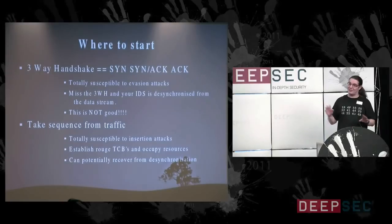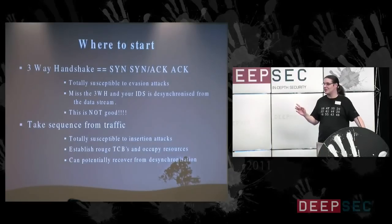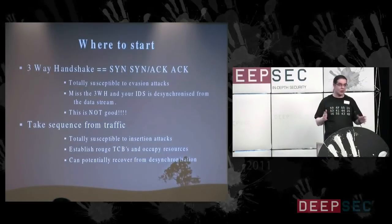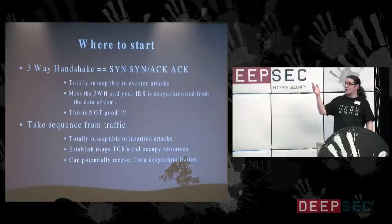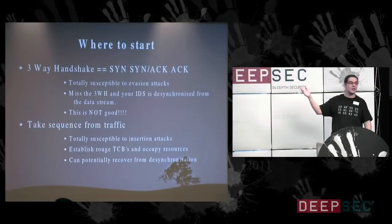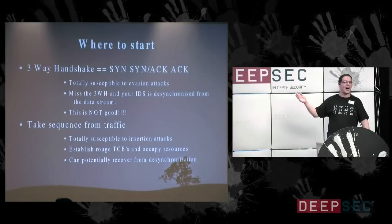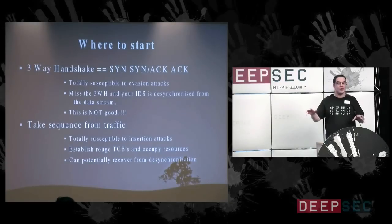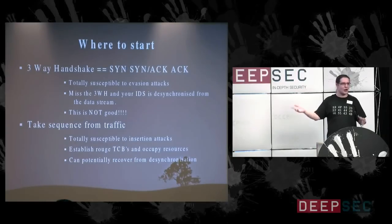If the IDS takes sequencing from traffic data only, that's also exploitable — I'll set up lots of spurious connection data so you start creating lots of TCB blocks, and let's see how much system resources you've got. Let's see how long you hold on to that TCB before you drop it, because from there I can gauge your configuration. If you take it from data only, you end up with lots and lots of open TCBs and no idea what's going on.